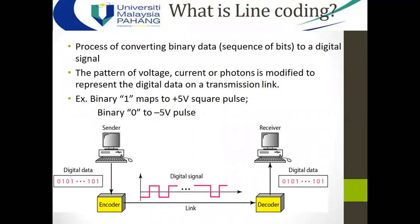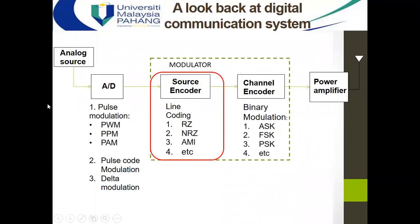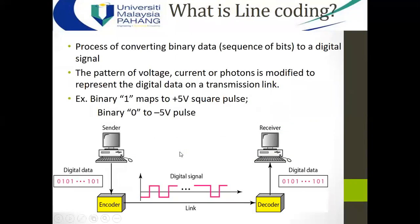In the analog-to-digital conversion due to PCM, we converted the analog signal in terms of binary code — two bits, three bits, or four bits and so on, depending on the level used for quantization. Now, before transmitting these bits through the channel, we have to convert them in terms of voltage level so they can travel through the link or channel. So what is line coding? It is the processing or converting of binary data or binary bits to a digital signal in terms of voltage or current.